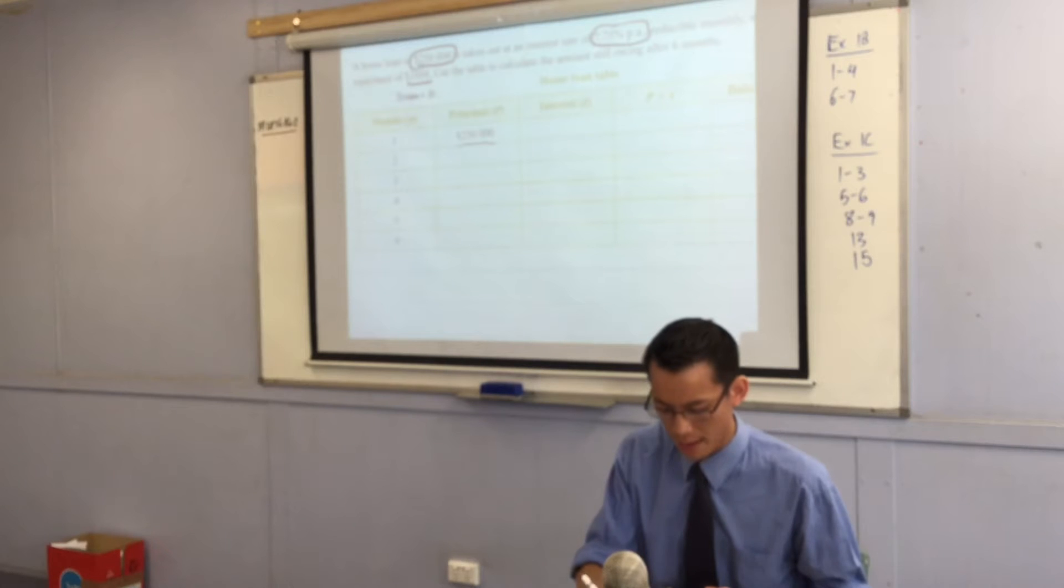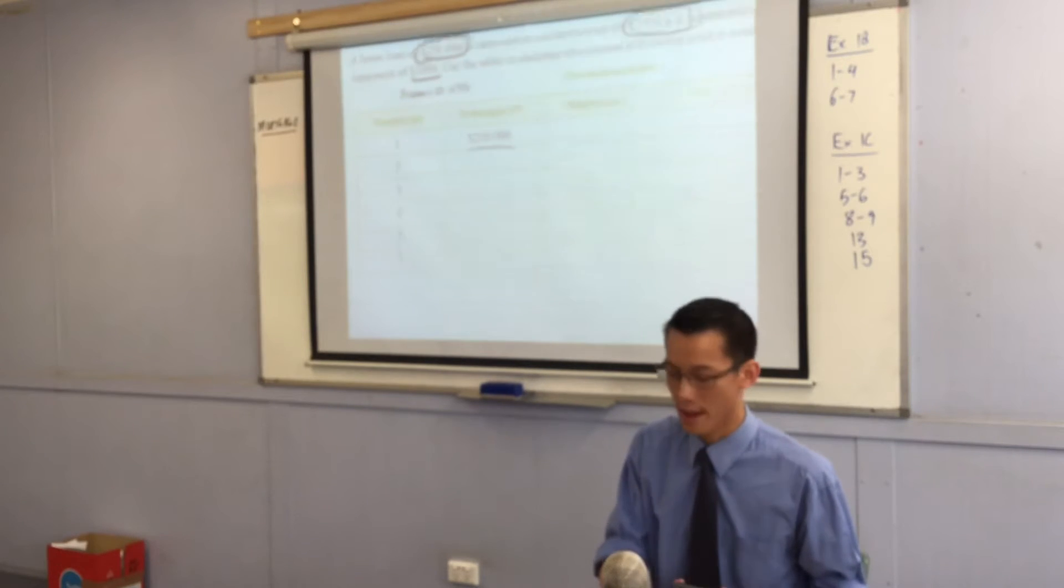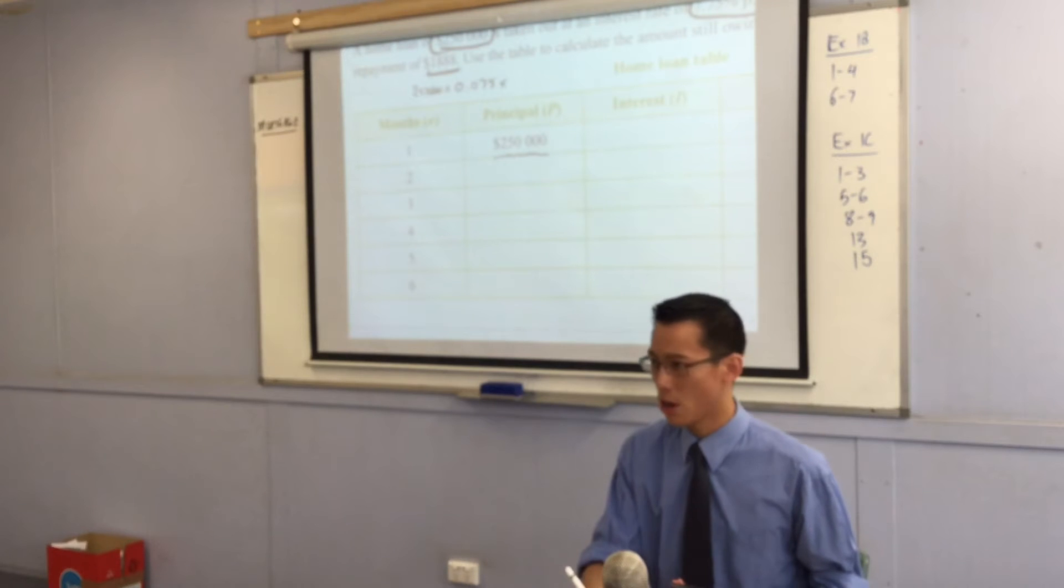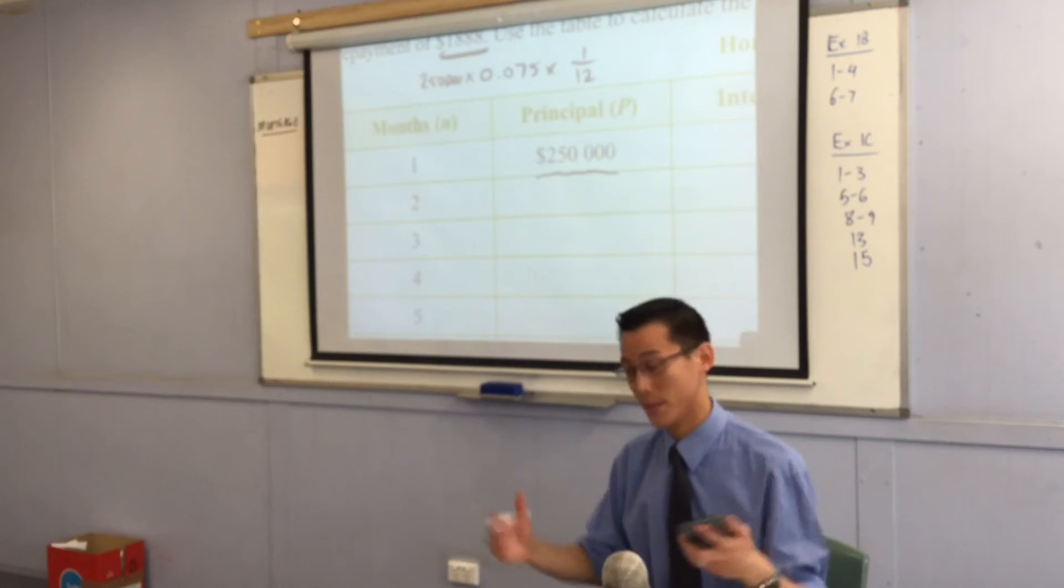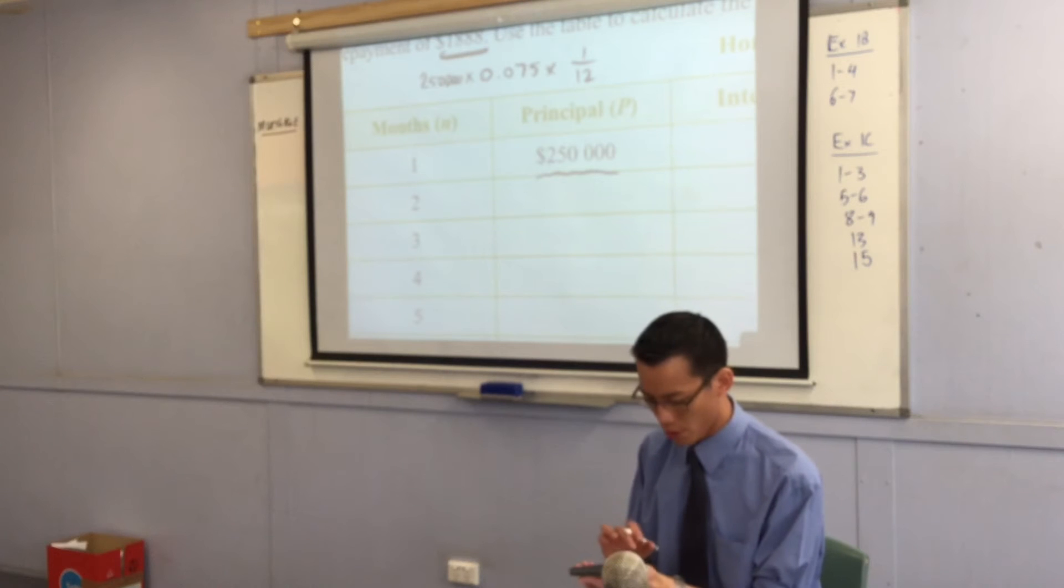But it's only a month, right? It's not a whole year. So the N is going to be 1 over 12. Do you see that? So that number there, that's the first little batch of interest they're going to charge me. So go ahead and punch that in.